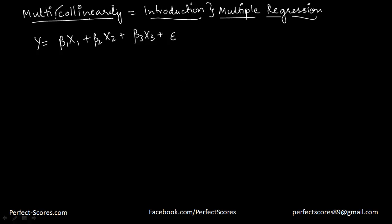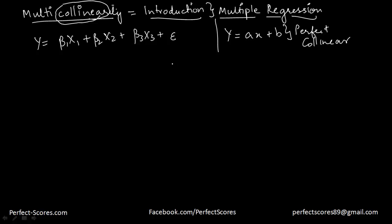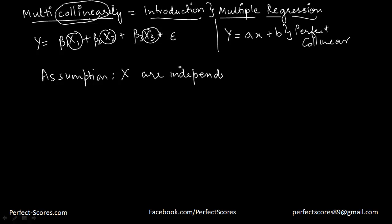As you can clearly see, multicollinearity has this word 'collinear' in it. Collinear means a perfect collinear relationship — for example, y is equal to ax plus b. This is a perfect collinear relationship between x and y. Now one assumption in our multiple regression model is that x1, x2, and x3 — all the x variables — are independent of each other. One value of the variable will not affect the other. However, when this assumption is violated, then we have a problem of multicollinearity.